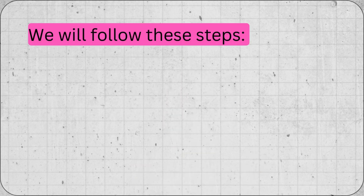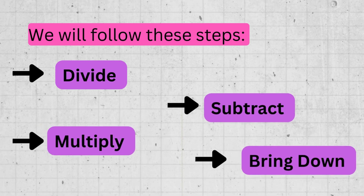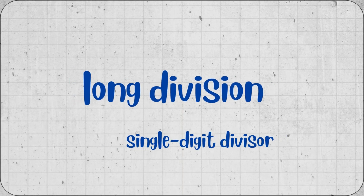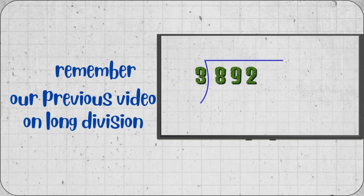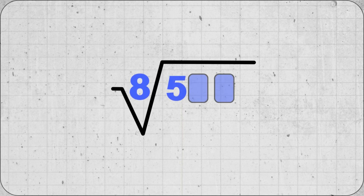Welcome to Mathics Lab! In this lesson, we will follow these steps: divide, multiply, subtract, and bring down. We're talking about long division with a single-digit divisor. You might remember from our previous video on long division that we can break a big division problem into smaller, manageable steps. The key is to go digit by digit, one step at a time. But what happens when the divisor is bigger than a one-digit number? Let's figure that out by looking at a couple of examples.